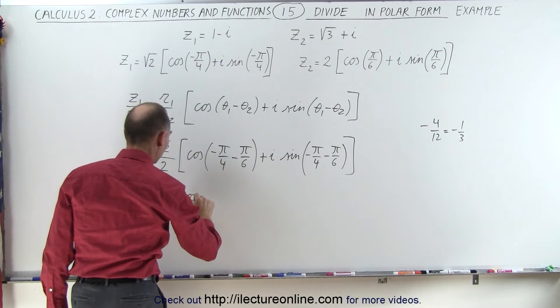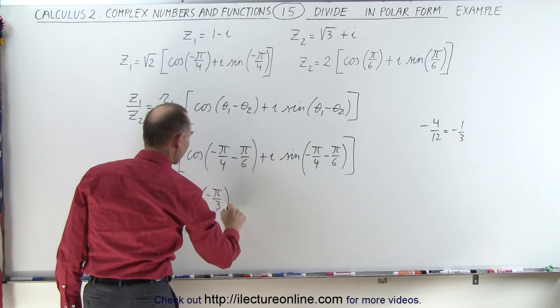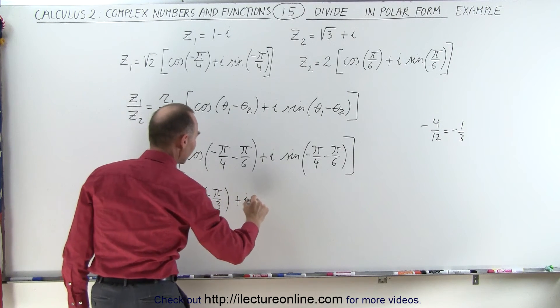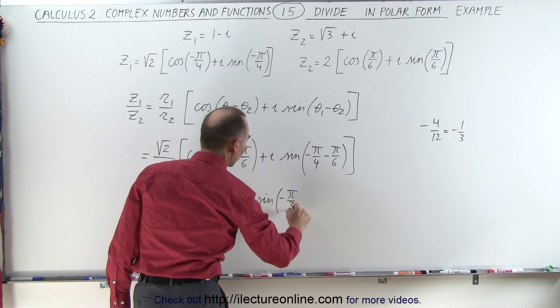So this becomes the cosine of minus pi over 3 plus i times the sine of minus pi over 3.